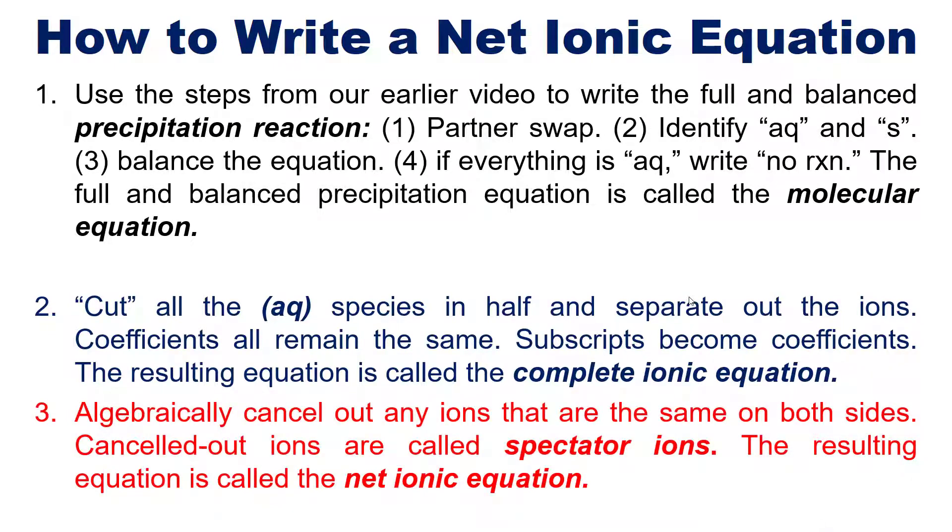And last, you algebraically cancel out any ions that are the same on both sides. Cancelled out ions are called spectator ions. The resulting equation then is called the net ionic equation.